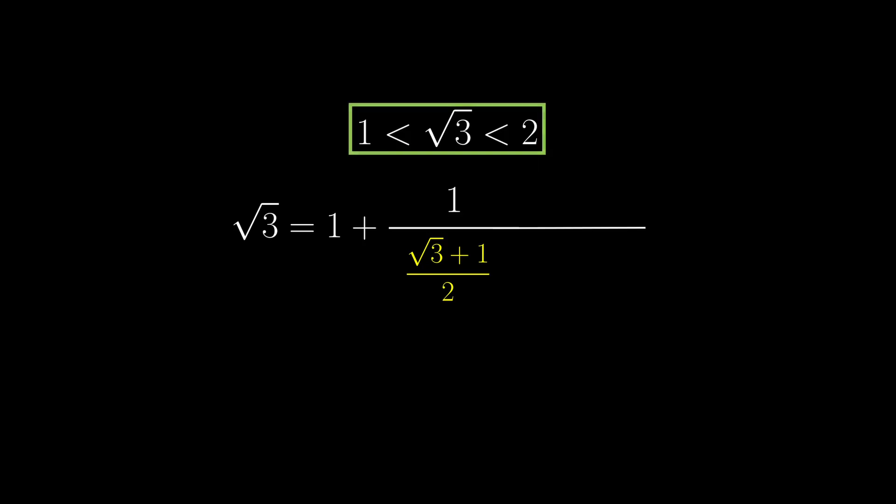Now from the original inequality, we get this new inequality with square root of 3 plus 1 divided by 2. So the integral part here is 1 again.